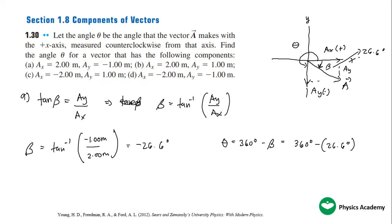So 360 minus 26.6, we have theta here. Theta here is equal to 333.4 degrees.